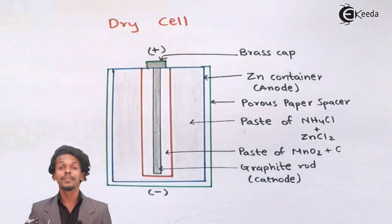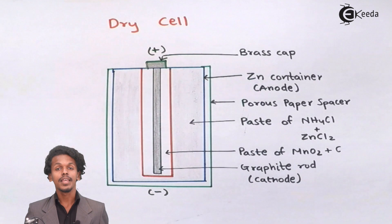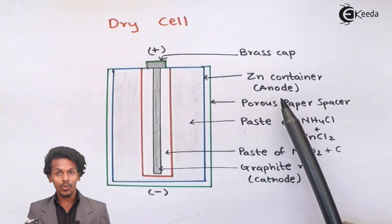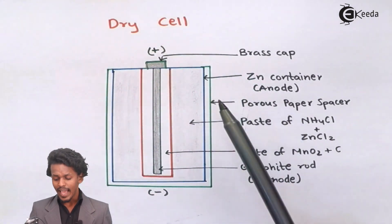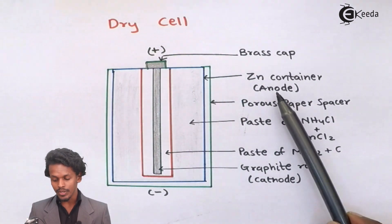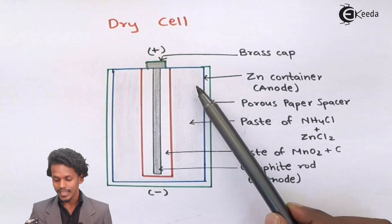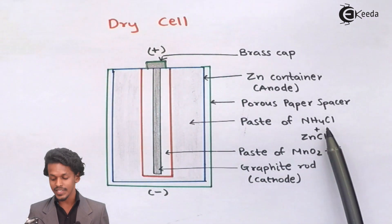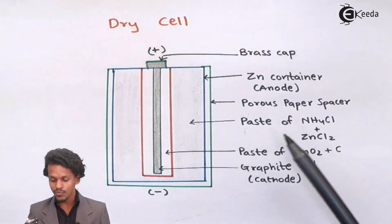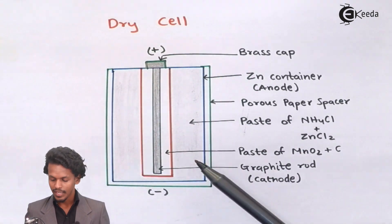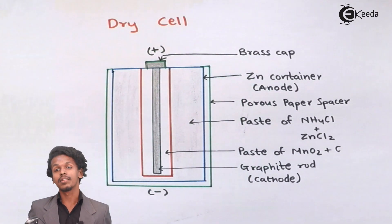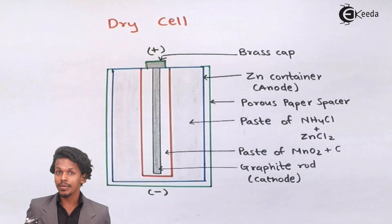The zinc container is covered with a porous paper spacer, and the zinc is acting as the anode. The cylinder is filled with a paste of NH4Cl and ZnCl2 — this is not an aqueous solution but a paste.